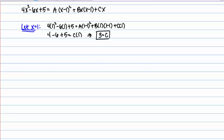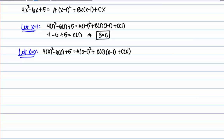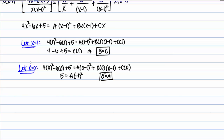Let's try another convenient value: x equals 0, which looks like it might make some terms go away. Plugging in x equals 0: on the left I'm left with 5. On the right I'm left with A times negative 1 squared — the B and C terms go away — so 5 equals A. But now I get stuck, because I haven't solved for B yet, and both x equals 1 and x equals 0 make B go away.